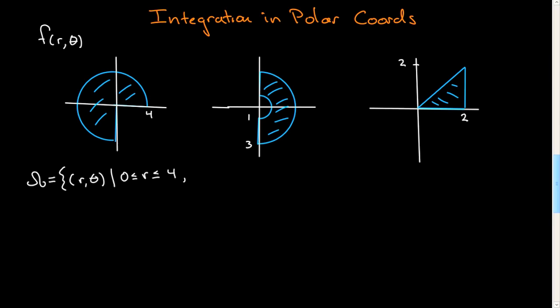And what about theta? Well this is theta equals 0, this right here, and it's going to swing around how much? Well that's 3 halves pi. So theta will be between 0 and 3π over 2. As I said it's a polar rectangle - r is between two fixed limits and theta is between two fixed limits.